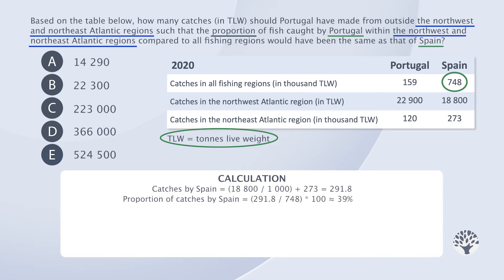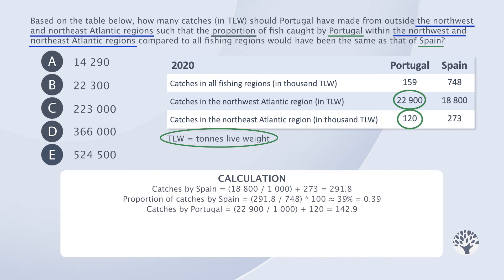Catches by Portugal in the North-West and North-East Atlantic regions in 1,000 TLW will be 22,900 divided by 1,000, plus 120, which equals 142.9. We also divided by 1,000 here since the data for the North-West Atlantic region in the table is not provided in the thousands the way it is for the North-East Atlantic region.